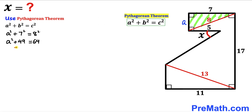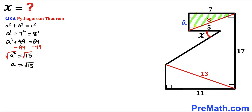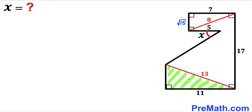I am going to subtract 49 from both sides — here we can see this cancels out — so therefore a² turns out to be 15. Now I am going to undo this square by taking the square root on both sides, so therefore our lowercase a value turns out to be √15.